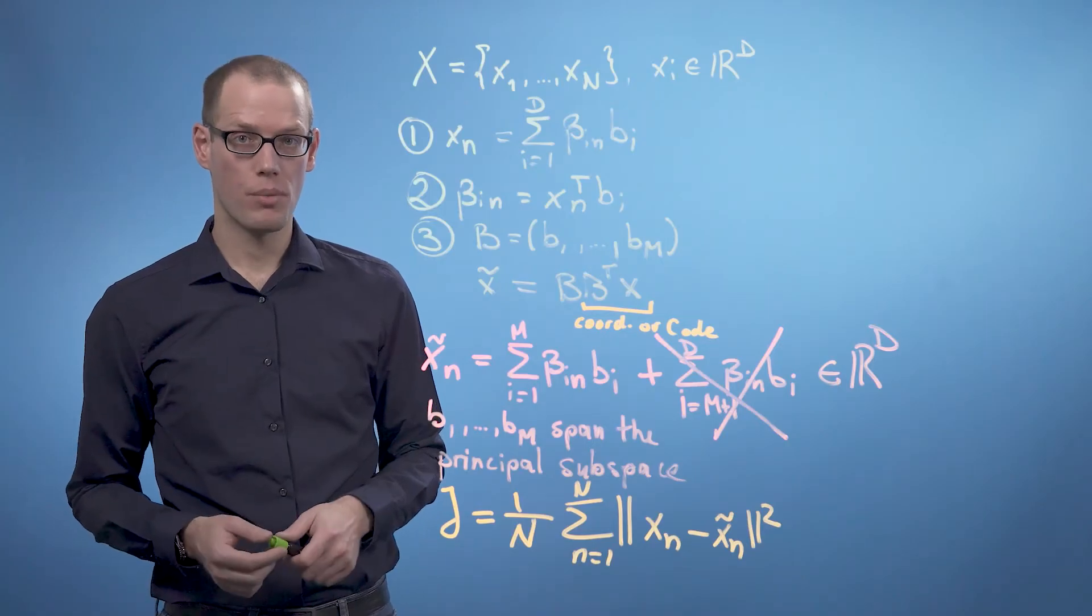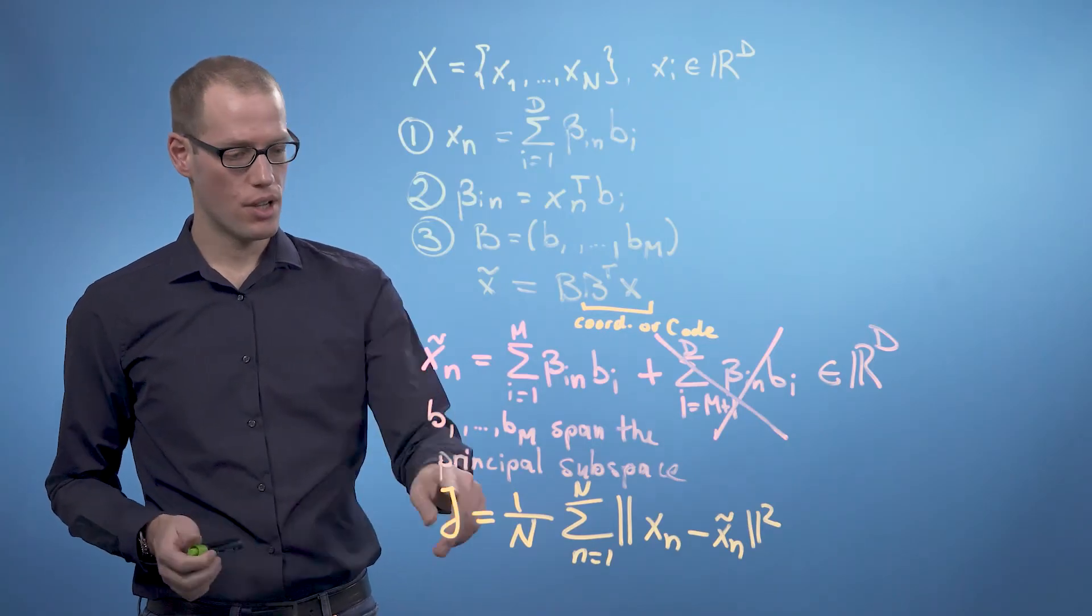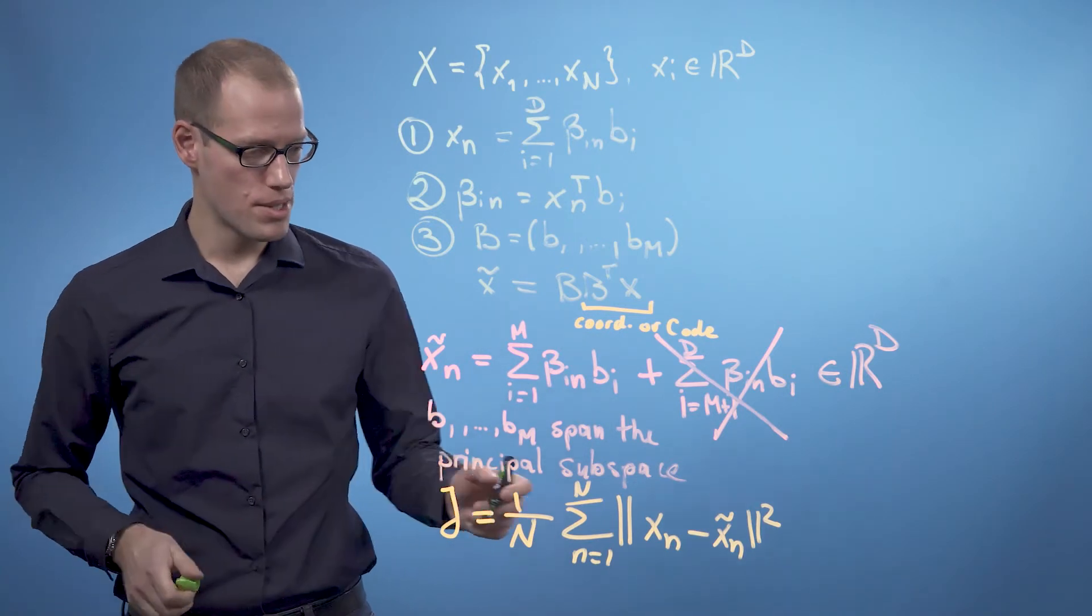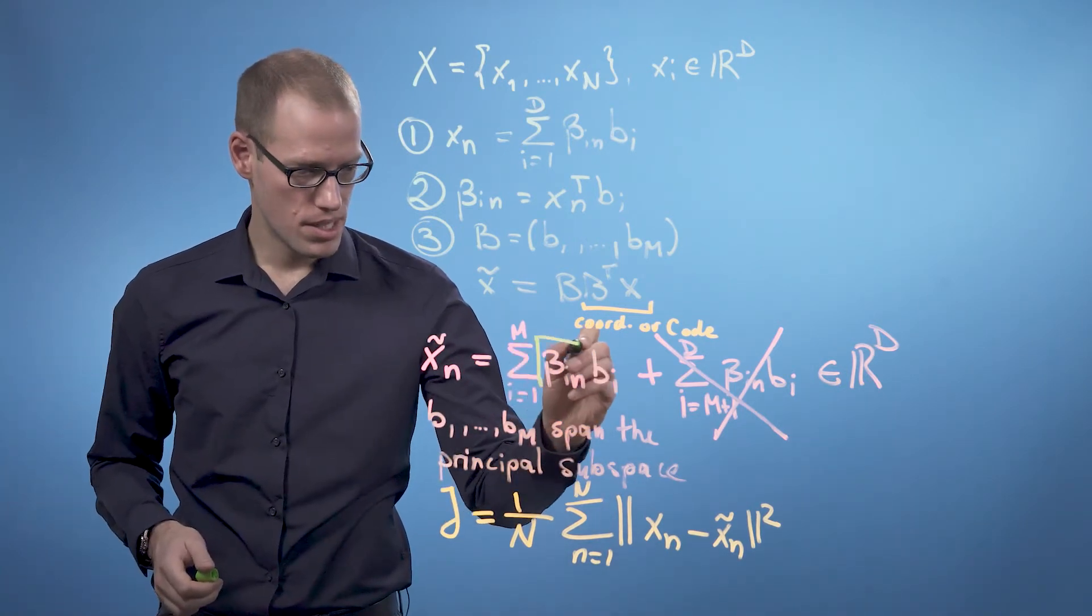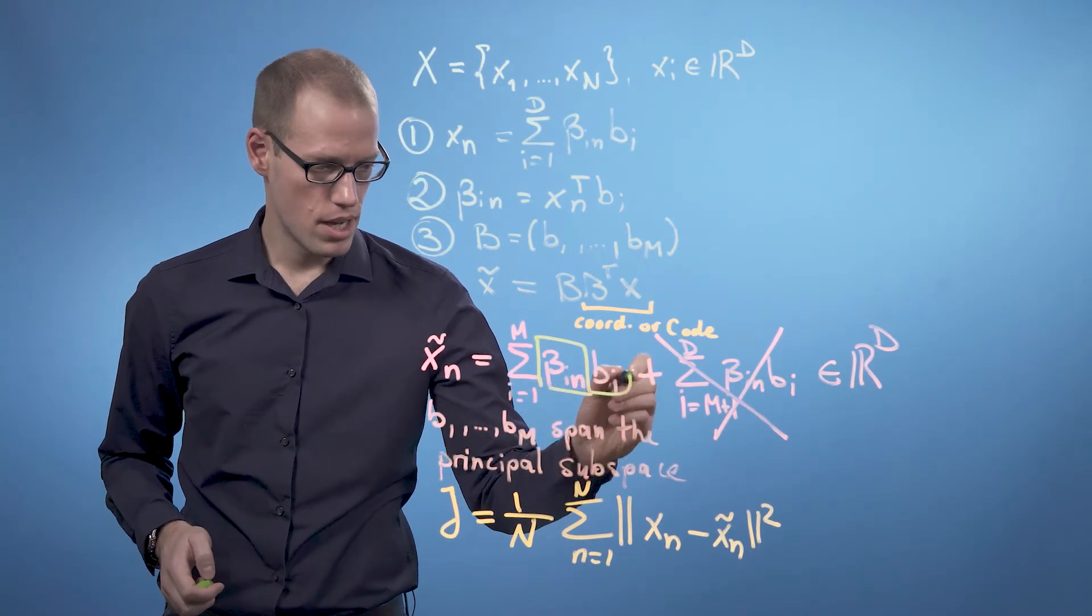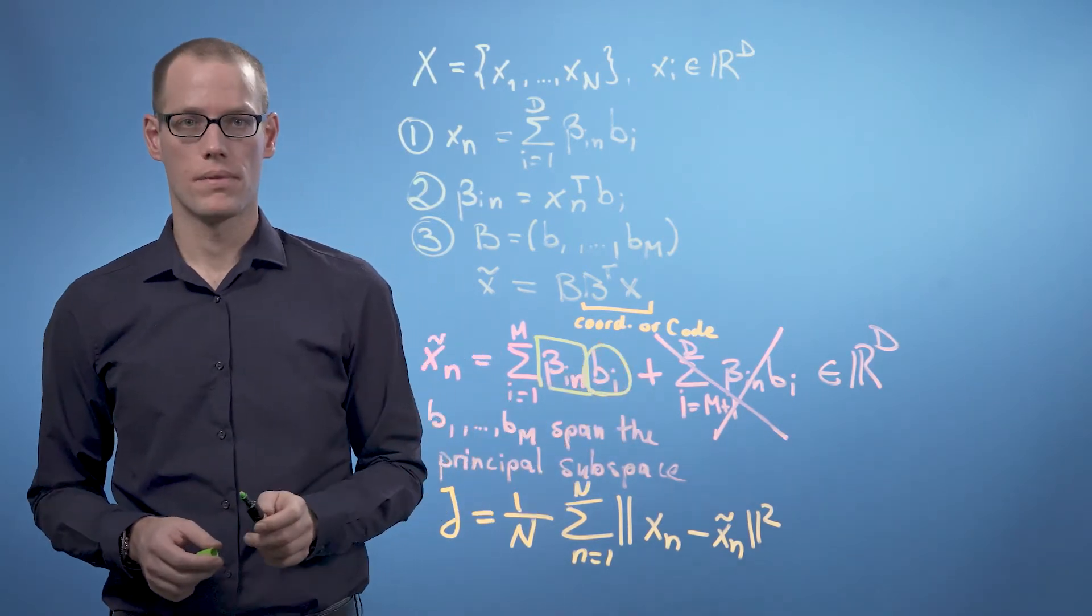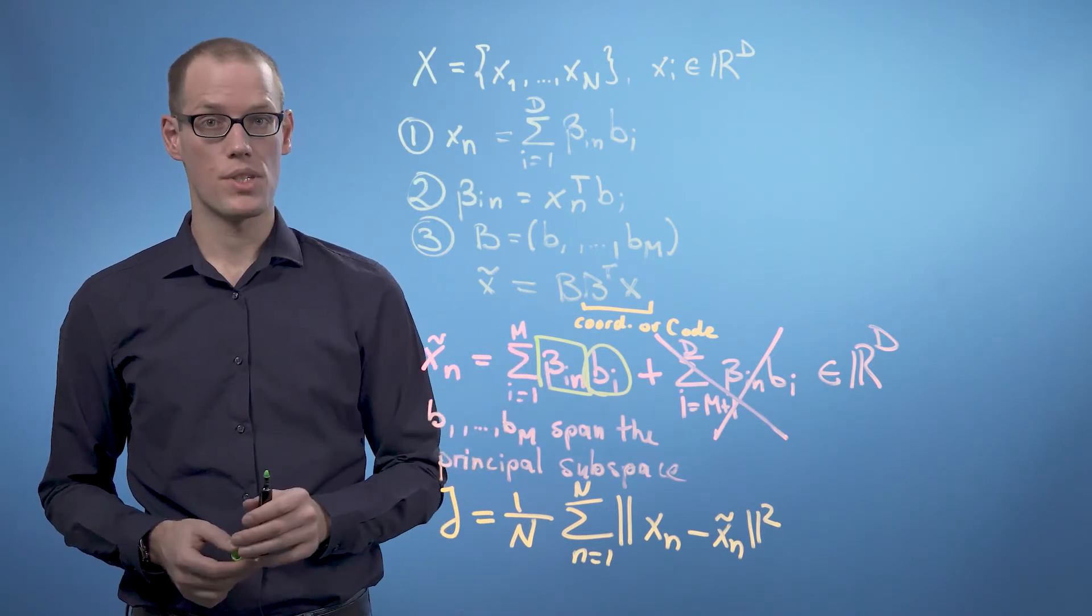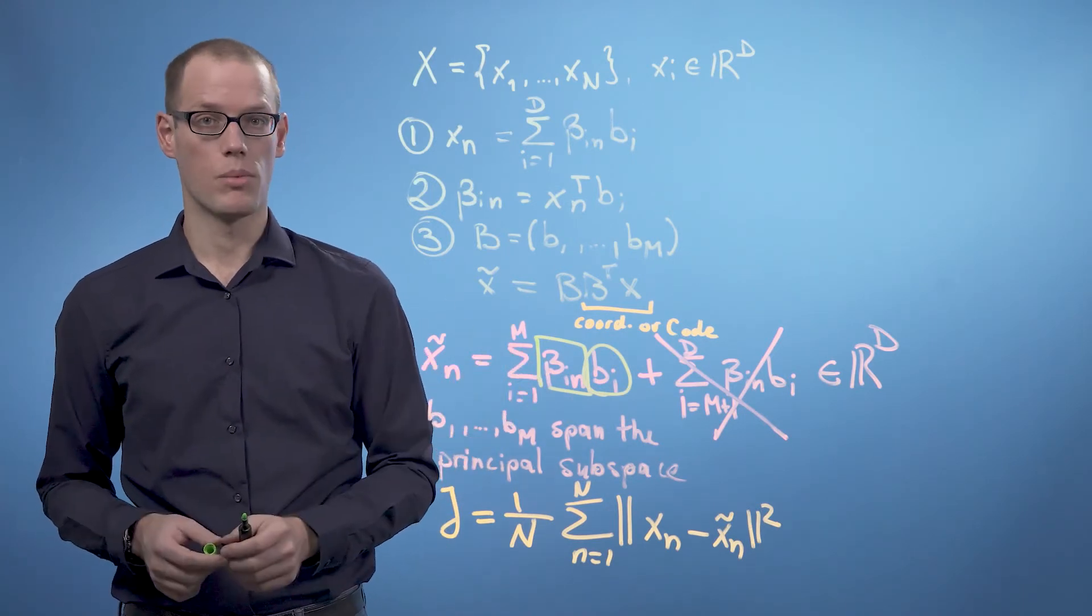Our approach is to compute the partial derivatives of J with respect to the parameters. The parameters are the beta_in and the b_i's. We set the partial derivatives of J with respect to these parameters to 0 and solve for the optimal parameters.